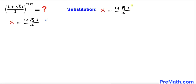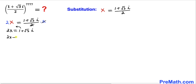Now let's multiply both sides by 2 to remove the fraction. Multiplying both sides by 2, the right-hand side gives us 2x = 1 + √3·i. Now let's move the 1 to the left-hand side, so we have 2x - 1 = √3·i.